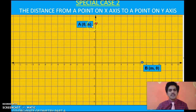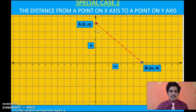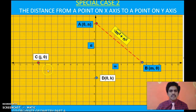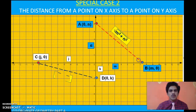Let us look at more examples. For points A(0, n) on the y-axis and B(m, 0) on the x-axis, the x-intercept is m and the y-intercept is n, so the distance is √(m² + n²). For points C(j, 0) and D(0, k), the x-intercept is j and y-intercept is k, so the distance is √(j² + k²). Similarly, for points (0, c) and (d, 0), the distance is √(c² + d²).